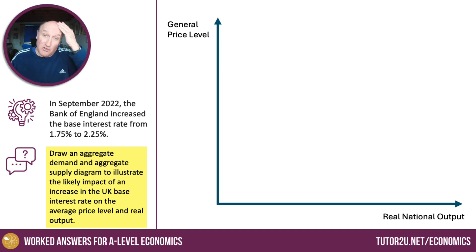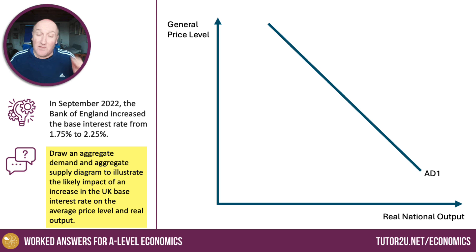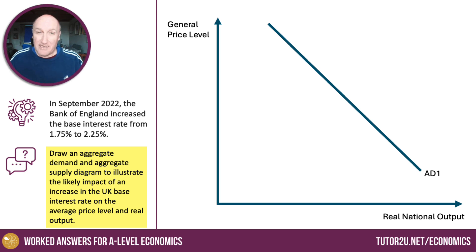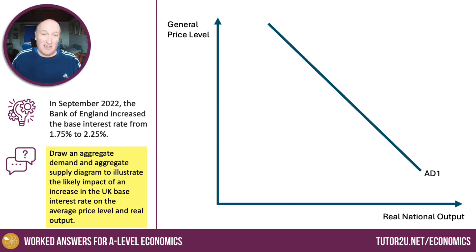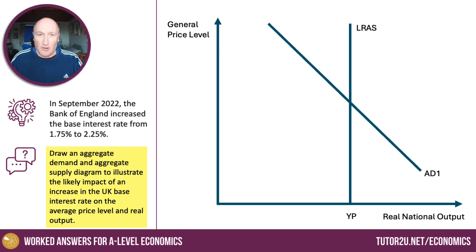Let's walk through the diagram — this is how you do it. It's a 4-mark question, so we don't need any explanation, although annotation is recommended. General price level goes on the y-axis, real national output on the x-axis. I'm going to be using the neoclassical model here. So here's our downward-sloping initial aggregate demand curve, with long-run aggregate supply that is fixed and perfectly inelastic.